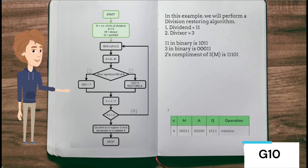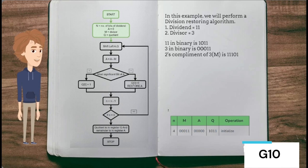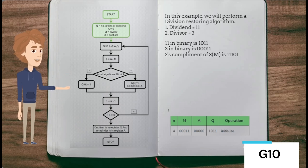We will now look at an example based on the restoring division technique: 11 divided by 3. The dividend is referred to as Q and the divisor as M. We convert both to binary — 11 in binary is 1011, and 3 in binary is 0011. Since the dividend is 4 bits long, N equals 4. The accumulator is 1 bit larger than the dividend and is initialized to 0.